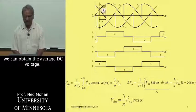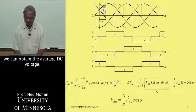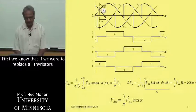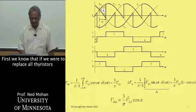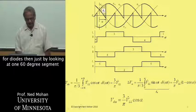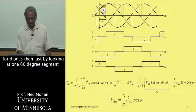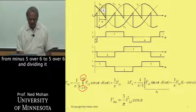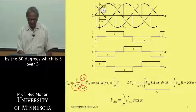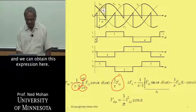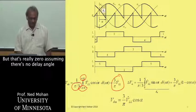We can obtain the average DC voltage. First, we know that if we were to replace all thyristors by diodes, then just by looking at one 60-degree segment from minus pi over 6 to pi over 6 and dividing it by 60 degrees, which is pi over 3, we can obtain this expression here. So that's VD0.